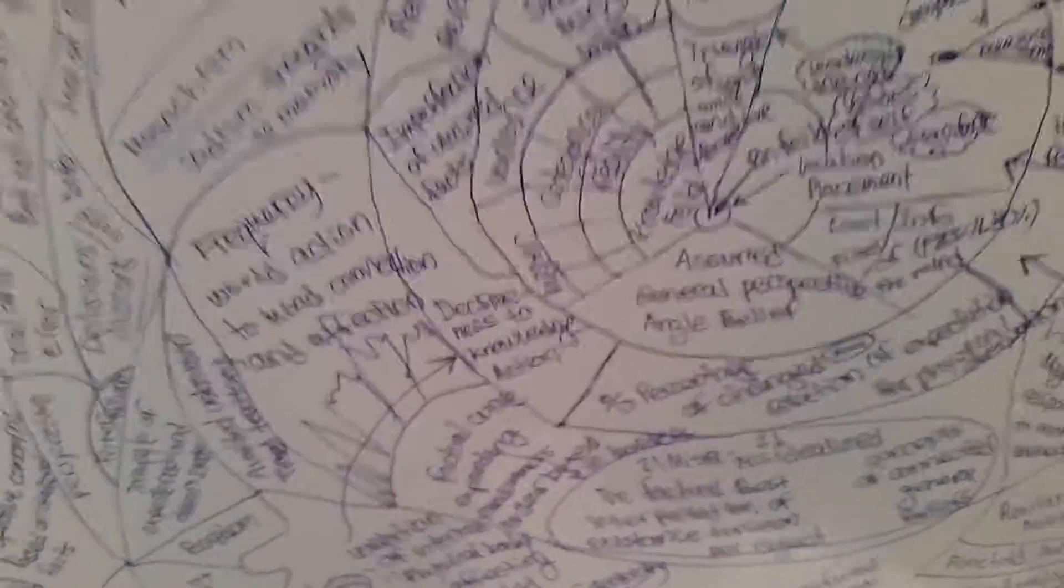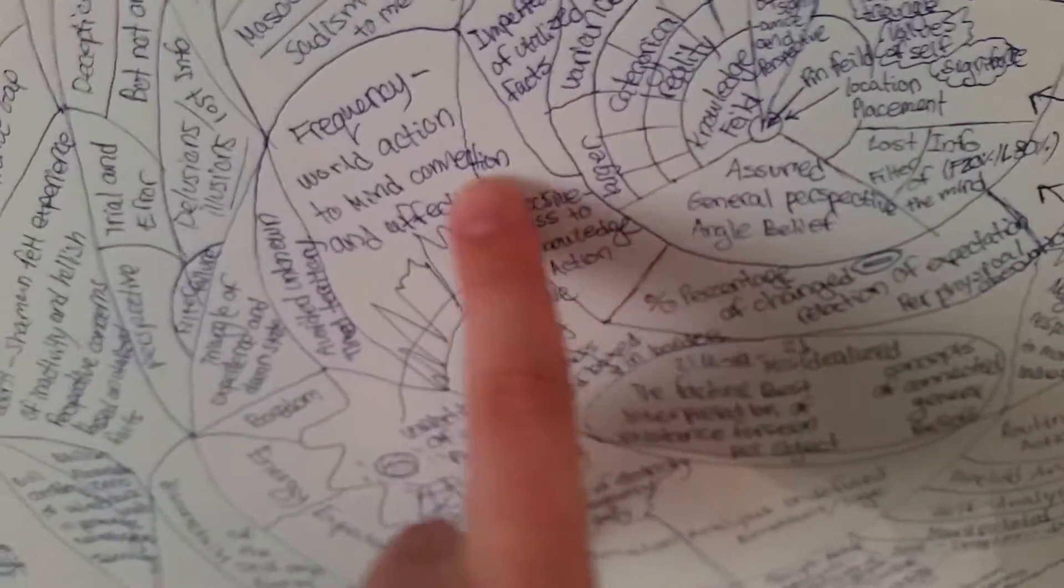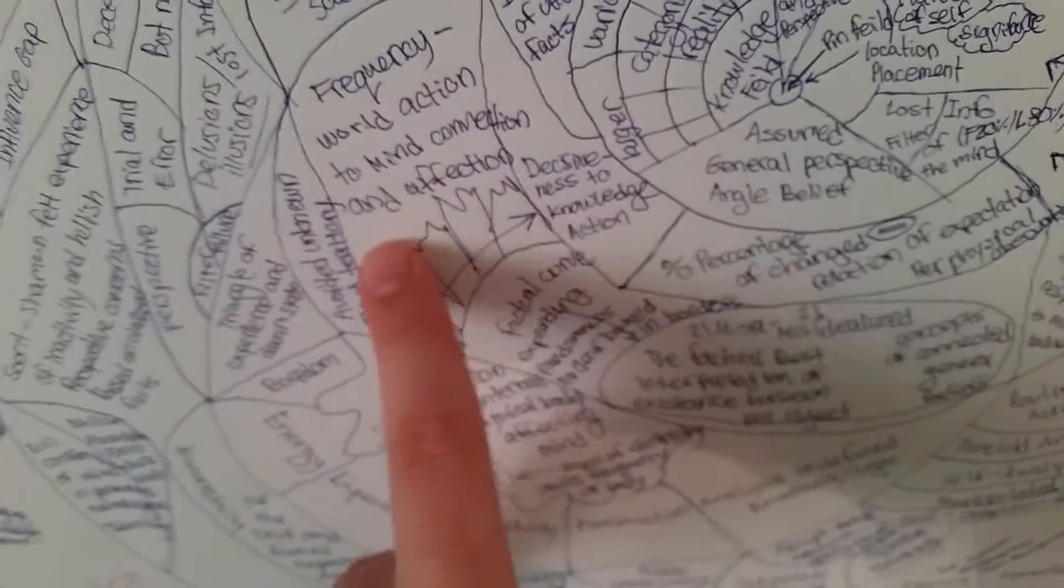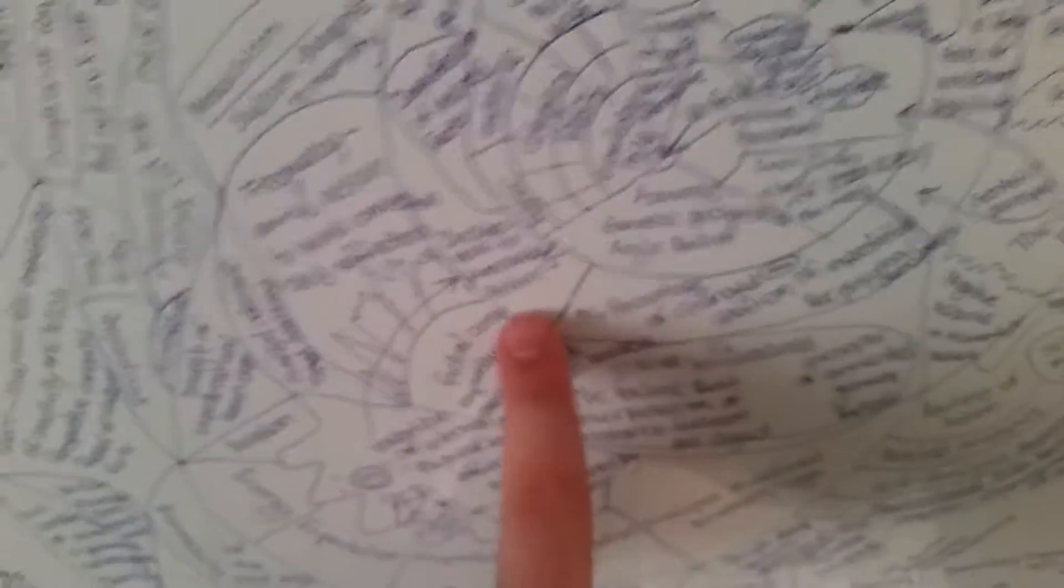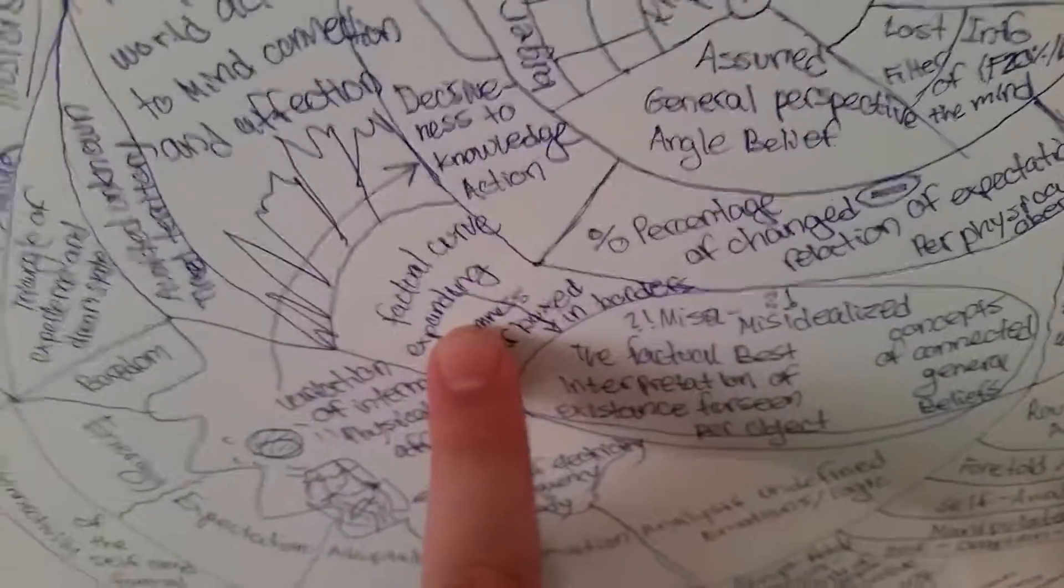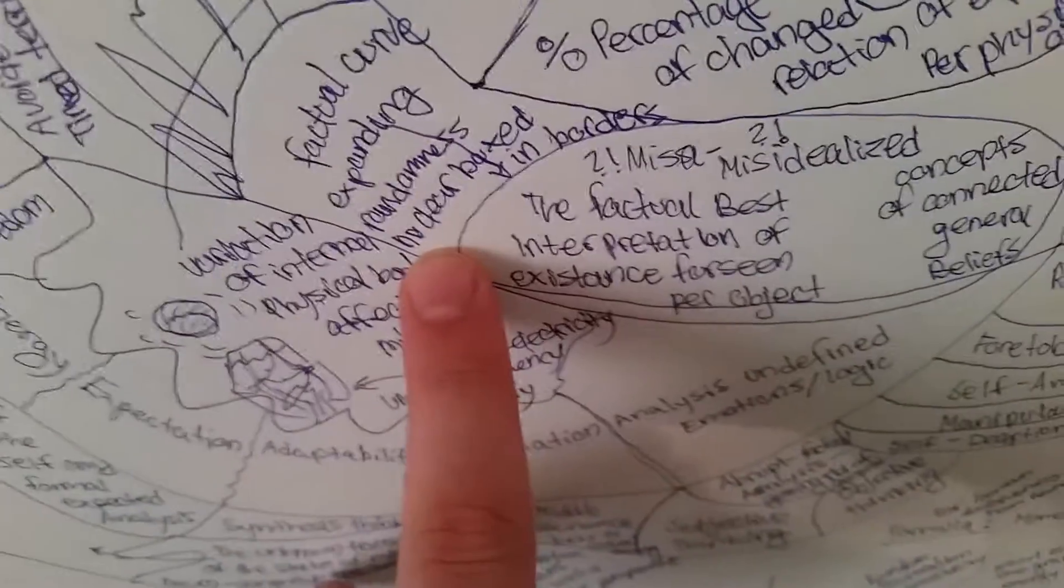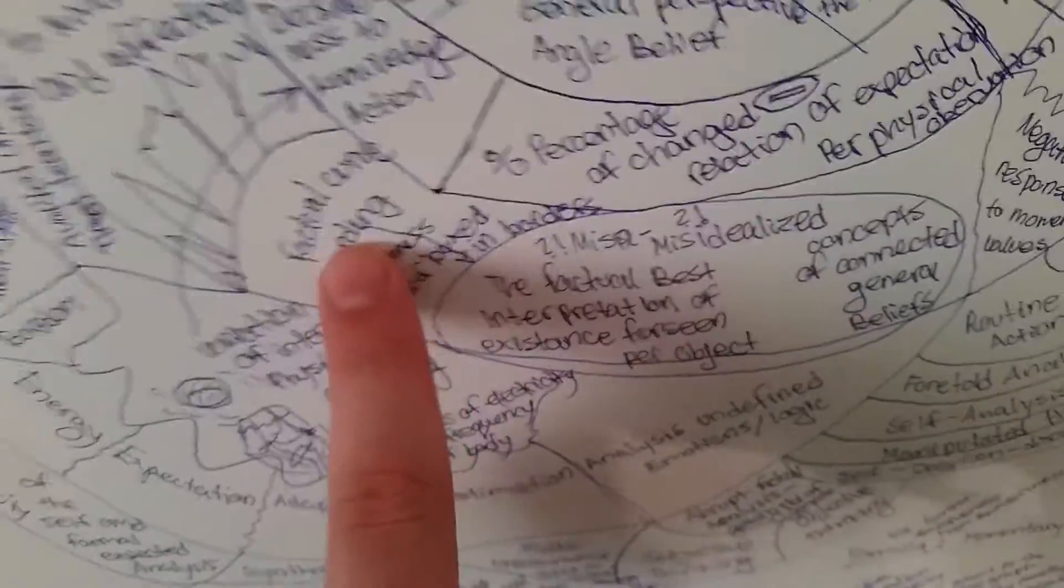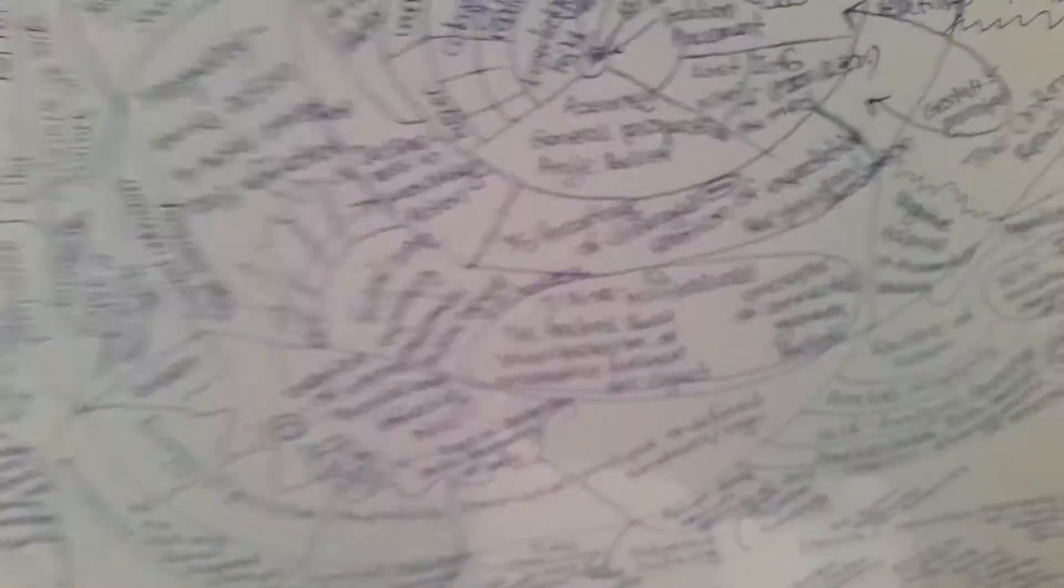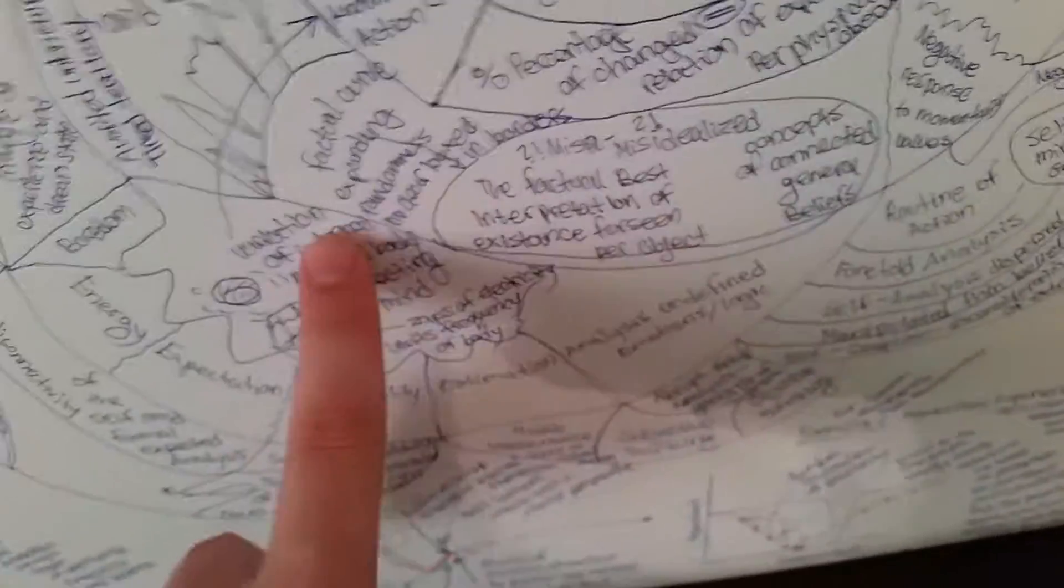Desireness to knowledge action, okay? So if you're more of a synthesis thinker you would go this way: frequency world action to mind connection and affection. So that will push you back. So the way you will have to go on this map is you would have to go factual curve expanding randomness in order, boxed in borders. So you've been boxed in with your synthesis mind if you think on the spot. Now you can't really—you could only proceed to the next one.